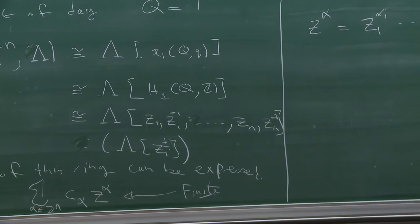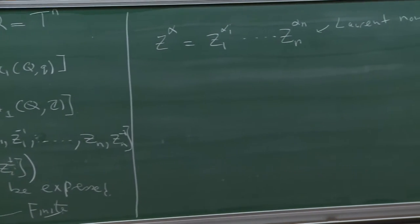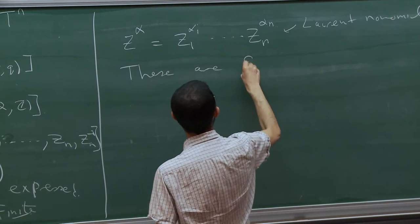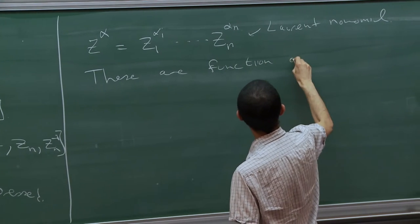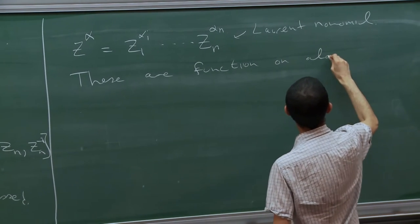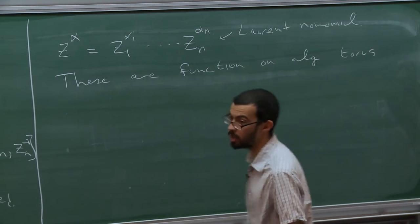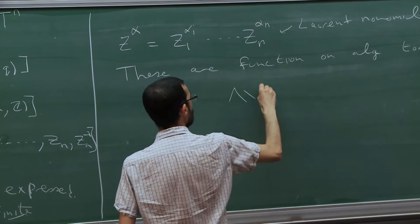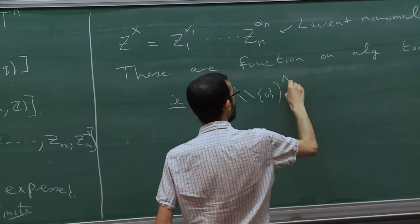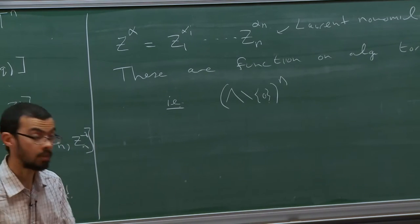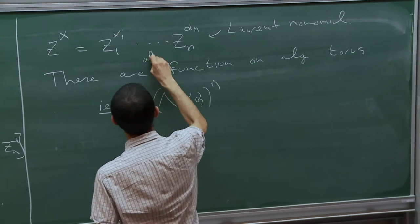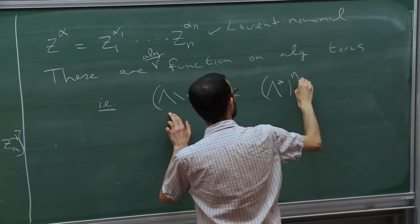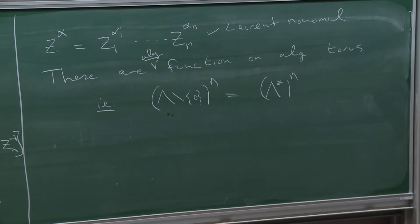If you know any algebraic geometry, you should think of these as functions on an algebraic torus — i.e., on (lambda \ {0})^n. I try to think about algebraic functions on this space. The notation is that this thing is called lambda*.